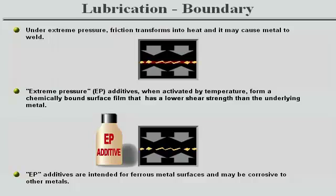The adherent surface film, which has a lower shear strength than the underlying metal, reduces friction to an acceptable level and protects the metal substrate. EP additives vary in chemical composition and reactivity, but they are intended for use with ferrous metal surfaces and may cause corrosion of other metals.